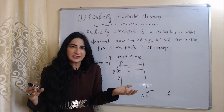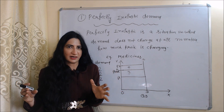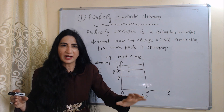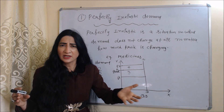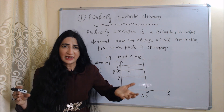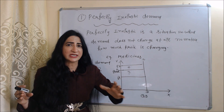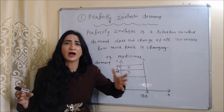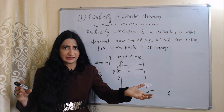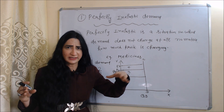The second type of price elasticity of demand is perfectly inelastic demand. Perfectly inelastic demand is a situation where demand does not change at all, no matter how much the price changes. For example, in the case of medicines, we have to buy them no matter how much the price increases.